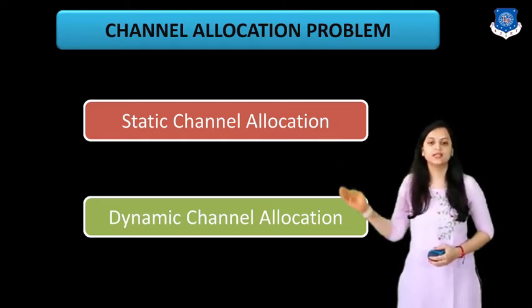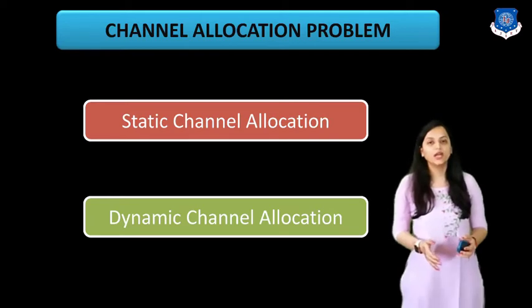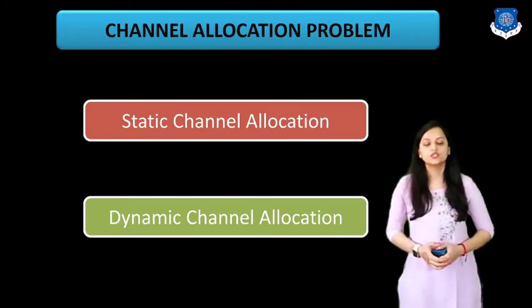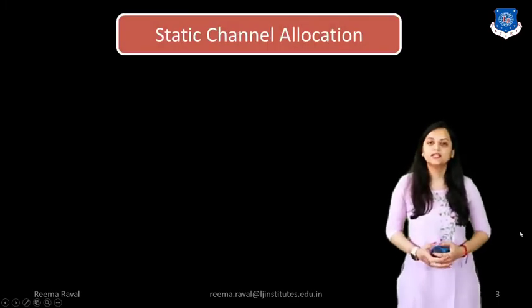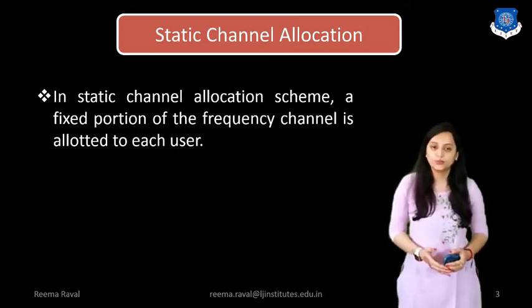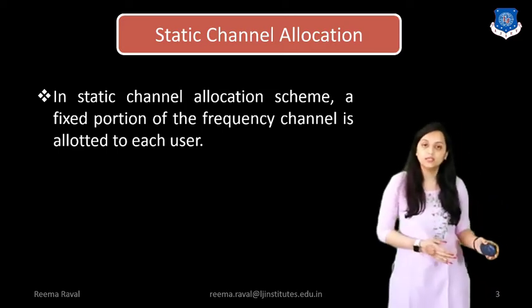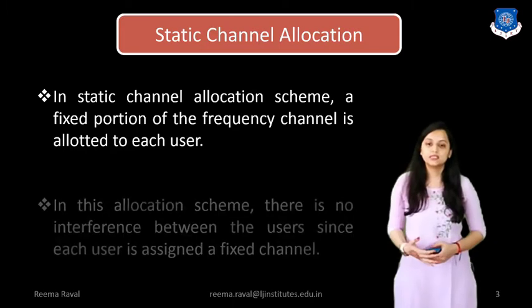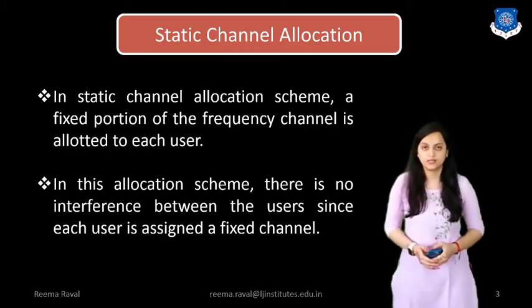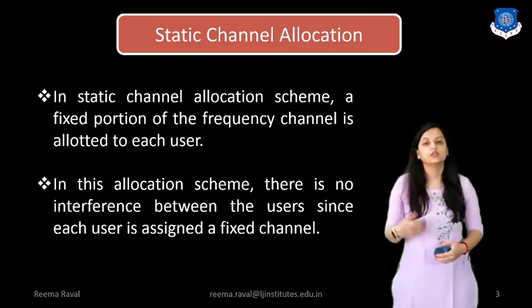In Static Channel Allocation, the channel allocated to a particular user is fixed. In the Static Channel Allocation scheme, a fixed portion of the frequency channel is allotted to each user — a particular user is assigned to a particular channel using which it can only transmit. There is no interference between users since each user is assigned a fixed channel. If the channel is not available or busy, the user cannot transmit the next data.